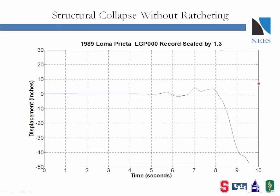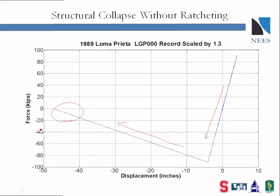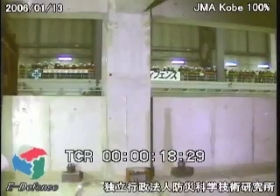Contrast this ratcheting-type behavior with collapse due to a ground motion with a strong pulse. Shown on this slide is the displacement time history of the same single degree of freedom structure used to create ratcheting collapse, only here it is subjected to the Loma Prieta earthquake scaled by a factor of 1.3. This is an example of non-ratcheting collapse as the structure experiences only 2-3 cycles prior to collapse from the large ground motion pulse. The force-displacement hysteresis shows predictable behavior as the structure collapses virtually monotonically. Experimentally, non-ratcheting collapse is shown with a non-ductile reinforced concrete structure tested on the E-Defense shake table in Japan, with immediate failure after the large ground motion pulse.